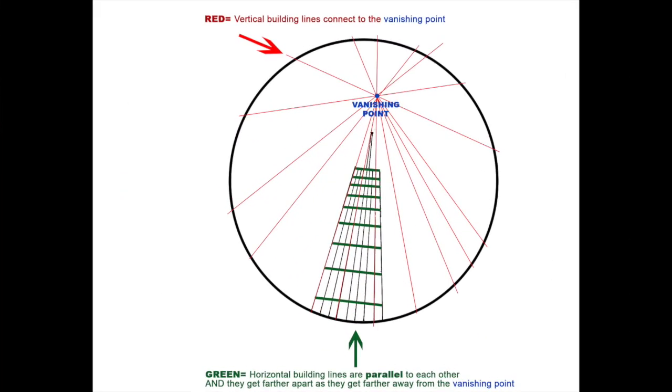Every horizontal line in your building should be parallel to the lines next to it, and notice how they get farther apart as they get farther away from the vanishing point. The horizontal lines close to the vanishing point are going to be closer together, and that is one of the things that will make your building look like it is going back into space.